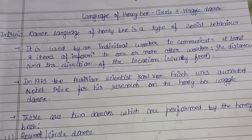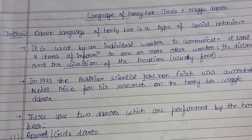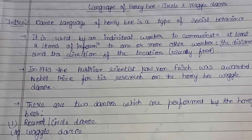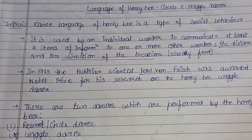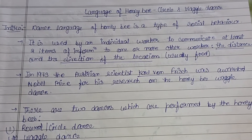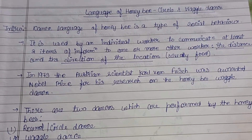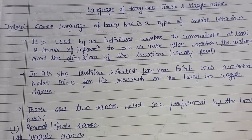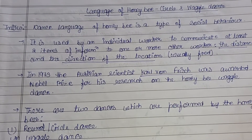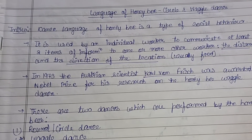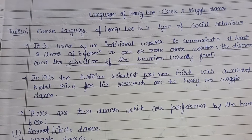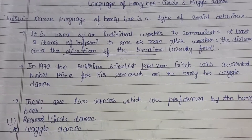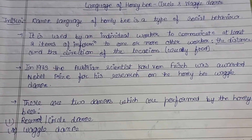In 1973, Austrian scientist Karl von Frisch was awarded the Nobel Prize for his research on the waggle dance of the honeybee.